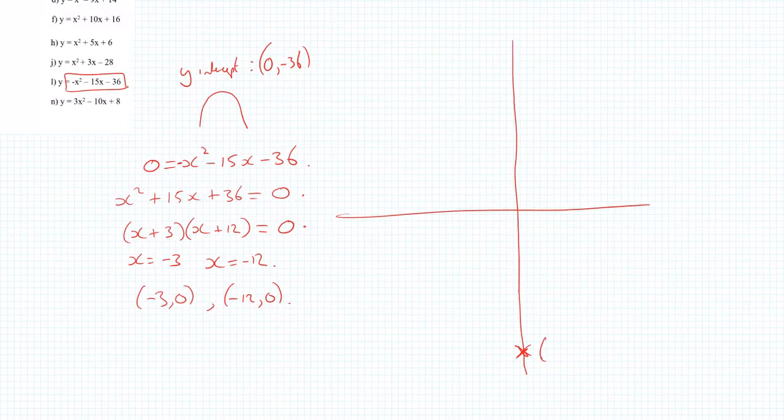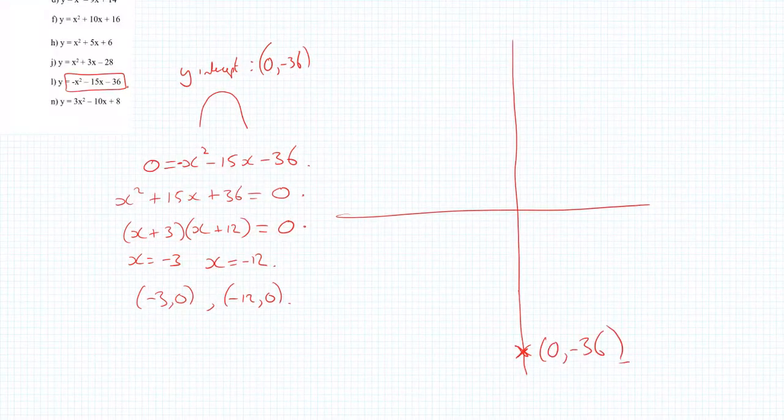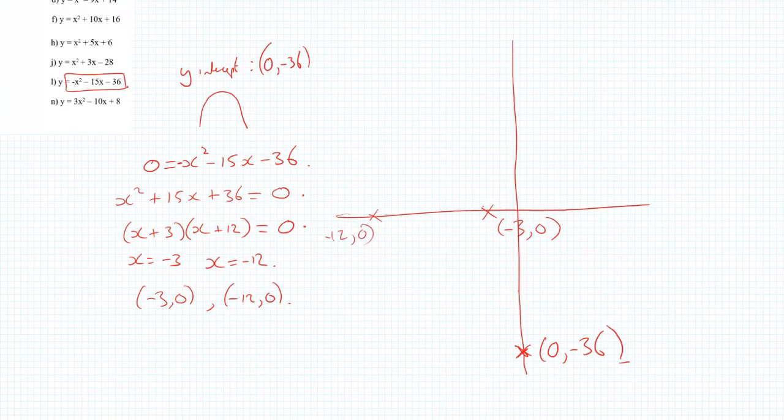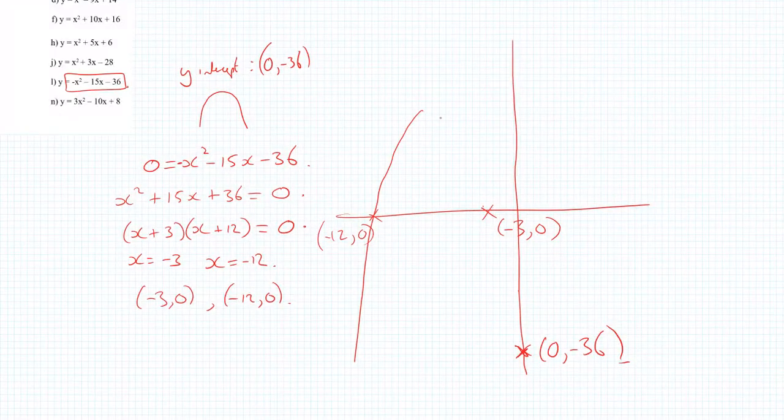So down here somewhere is my y intercept. I'm going to have a value here minus 3, 0 and a value over here minus 12, 0. And my shape is a sad face. So we're going to maybe look something like this.